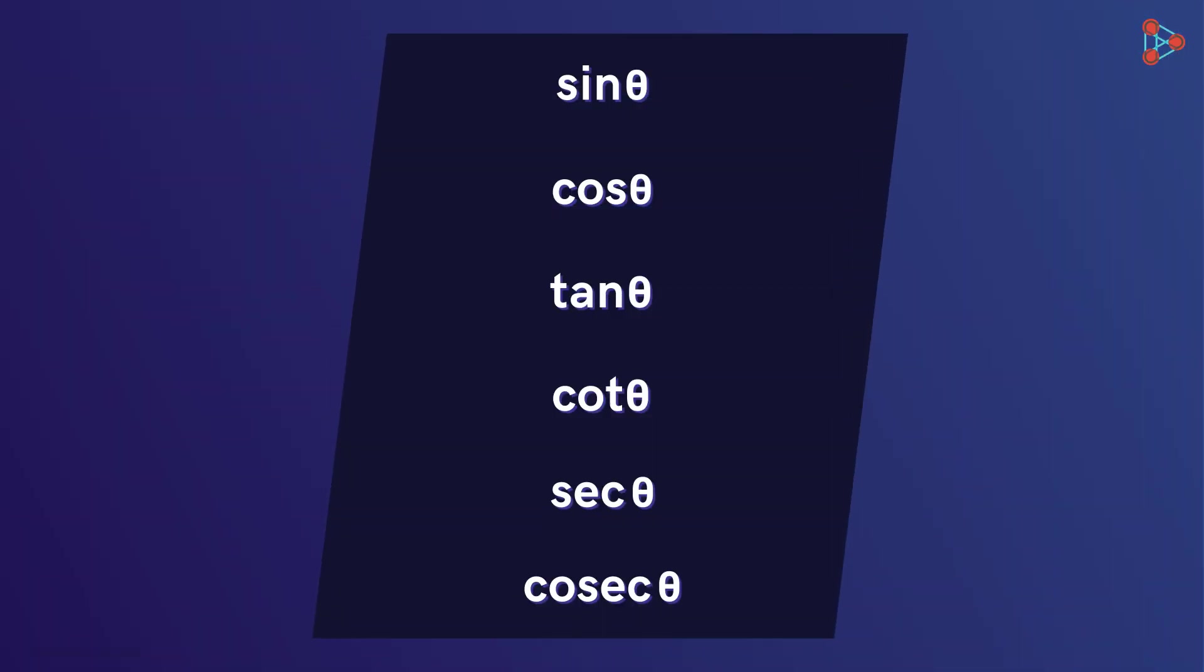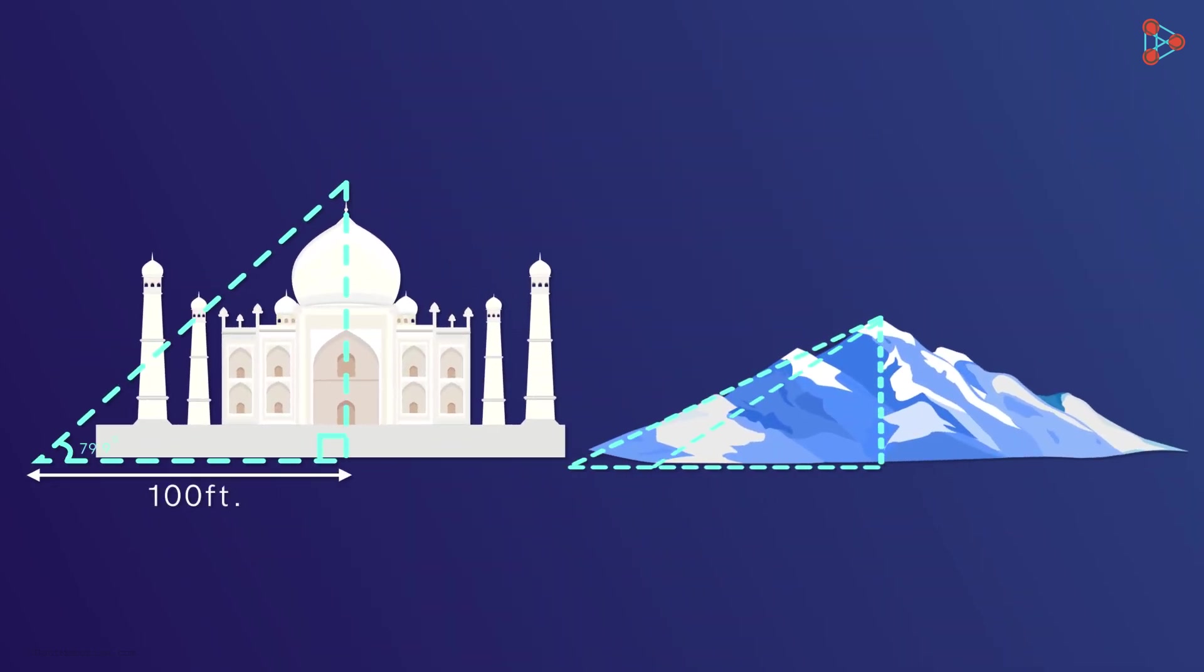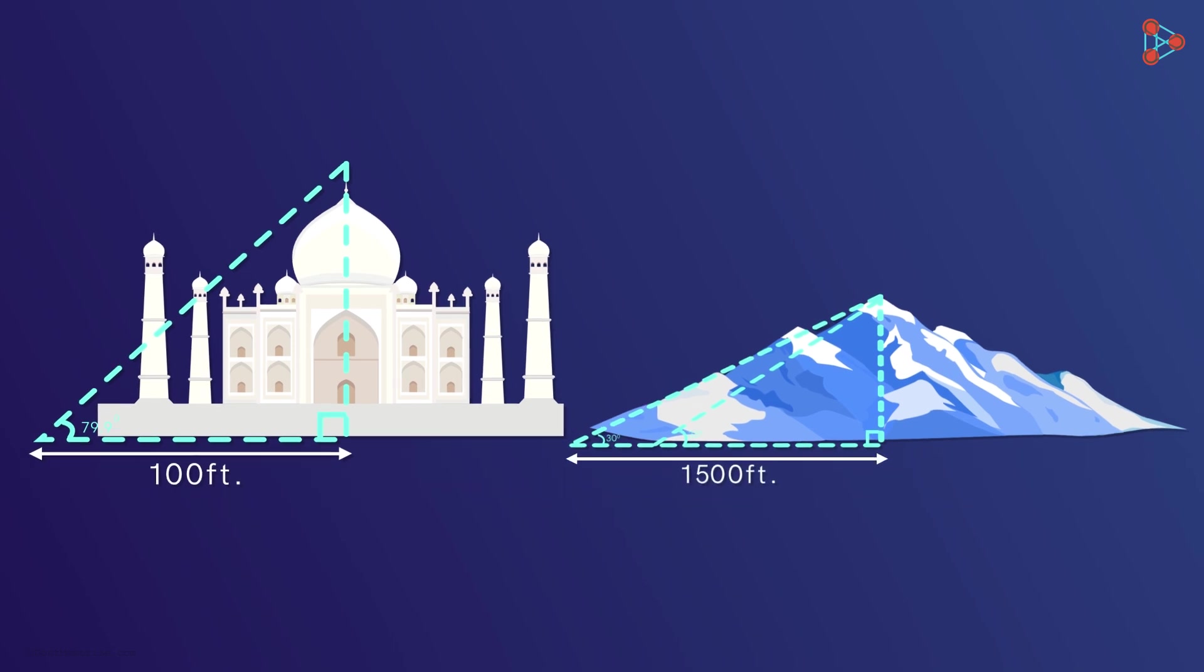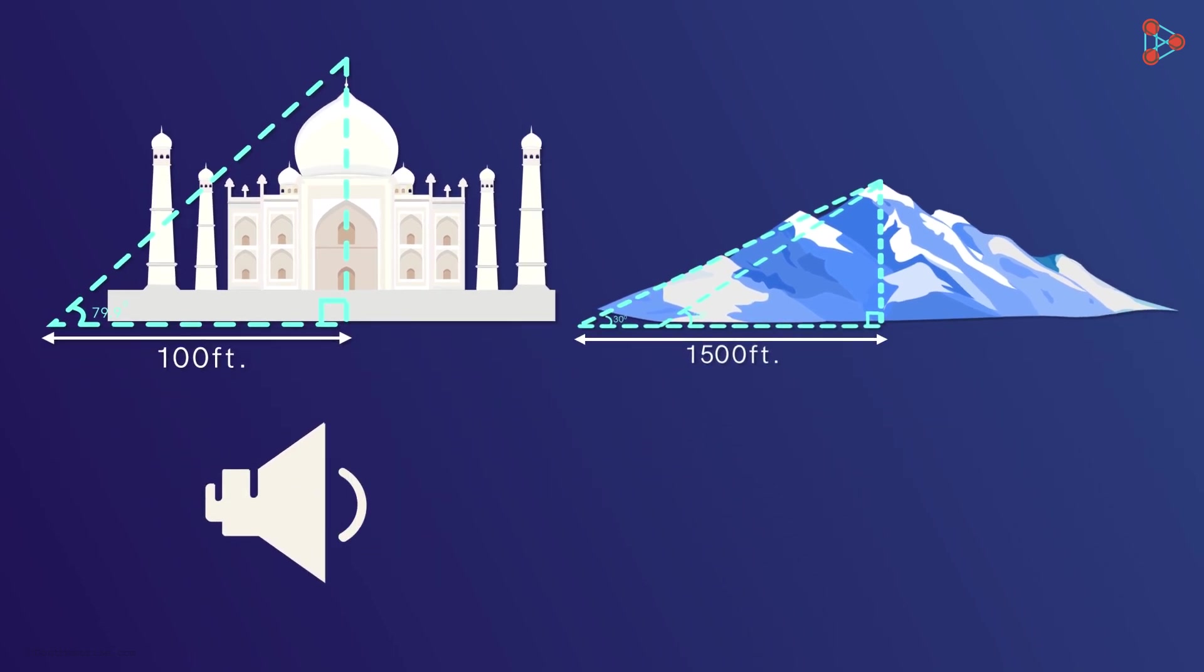Earlier we have seen many trigonometric functions and how useful they are. They can be used for measuring the heights of buildings or mountains. Even sound which travels in the form of waves can be represented as a combination of sine and cosine waves.